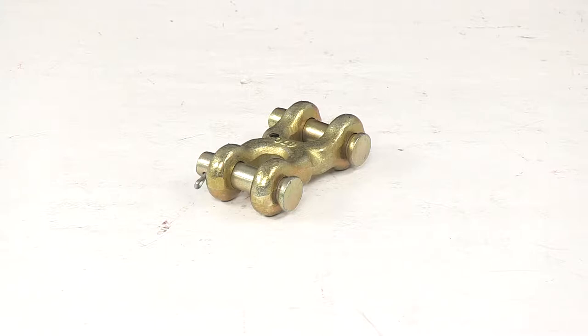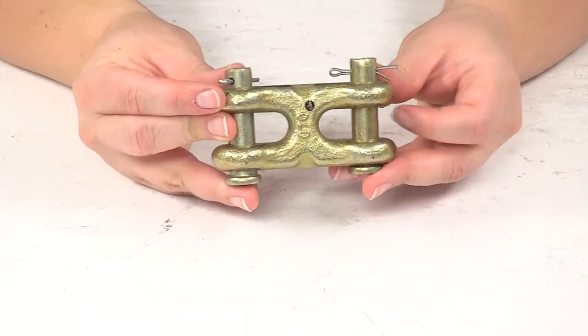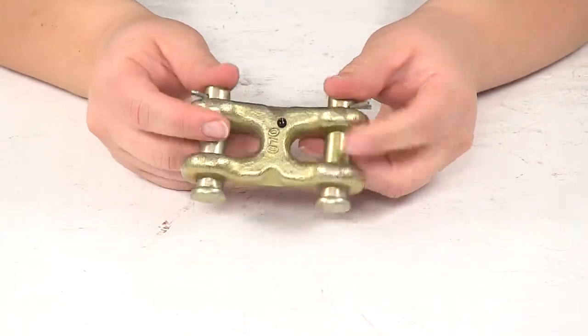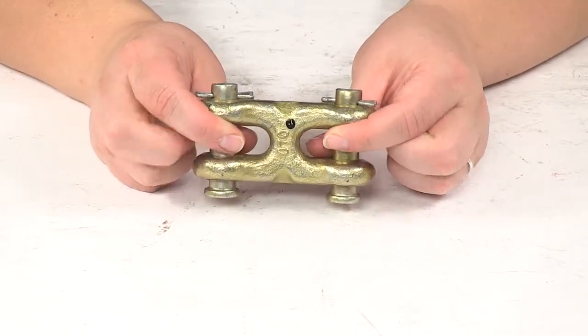Today we're going to take a look at the tighten chain mid-link for chain with half-inch thick links. This is going to allow you to reattach your chains together by replacing a broken chain link with this mid-link.